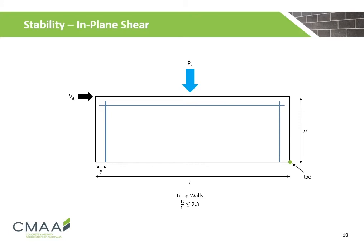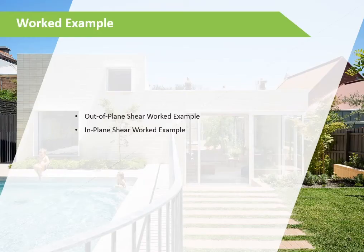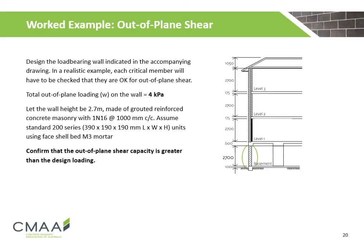Here is a diagram of where the anchorage reinforcement shall be placed in a long wall. This diagram shall be used in conjunction with the equation explained in the previous slide. We will now go through a worked example to determine the out-of-plane and in-plane shear capacity of a reinforced masonry wall. This example requires us to design a load-bearing wall with a total out-of-plane loading of 4 kPa. The wall is 2.7 m high, made of grouted reinforced concrete masonry with one N16 reinforcement at 1,000 mm centres using face shell bedding of M3 mortar.